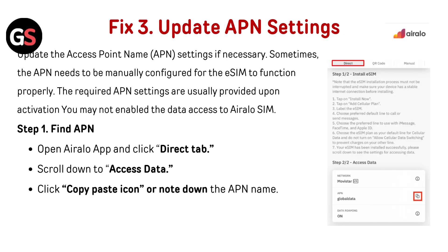Check APN Settings: update the Access Point Name settings if necessary. Sometimes the APN needs to be manually configured for the eSIM to function properly. The required APN settings are usually provided upon activation. To find the APN, open the AirLo app and click the Direct tab. Scroll down to Access Data, then click the copy-paste icon or note down the APN name.